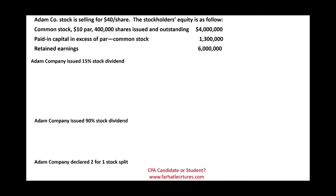Hello and welcome to this session in which we look at a stock dividend example. We are given data for Adam Company, including the stockholders equity from the balance sheet and the selling price for the stock. Adam Company stock is currently selling for $40 per share — that's the market price — and the stockholders equity is as follows.